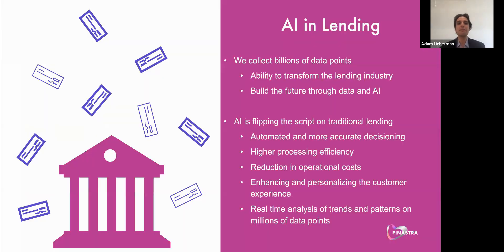The lending industry is packed with data. Every day, we are collecting more and more data in structured and unstructured formats and pumping databases with billions of detailed records. Data is really the lifeblood of AI, and it's the fuel to the AI rocket that is taking us on the journey of transforming the lending industry. Leveraging artificial intelligence, we are flipping the script on traditional lending. AI is allowing us to automate and create more accurate decisioning, increase processing efficiency, reduce internal operational costs, and create better and more personal experiences for our customers and clients.